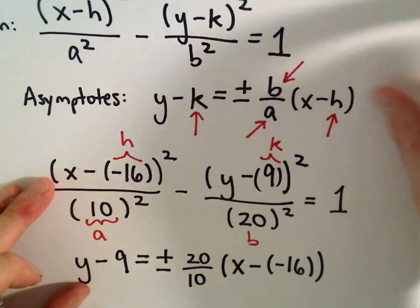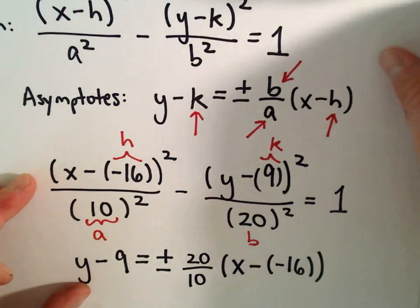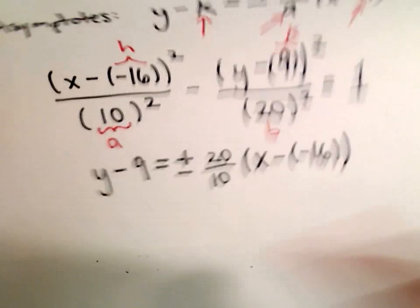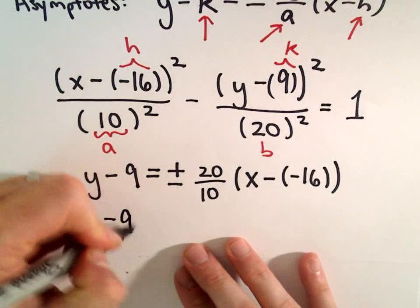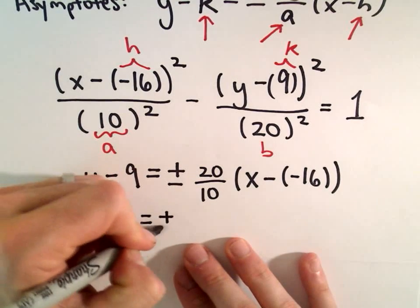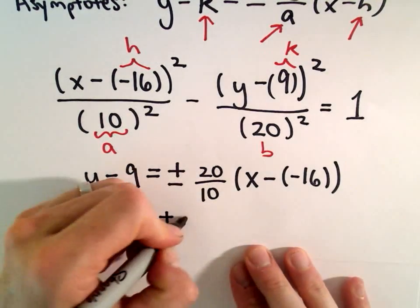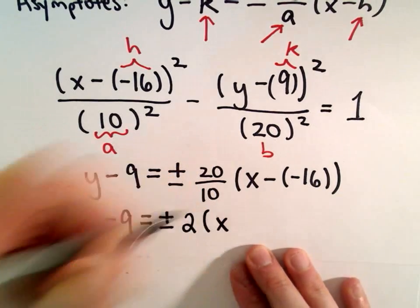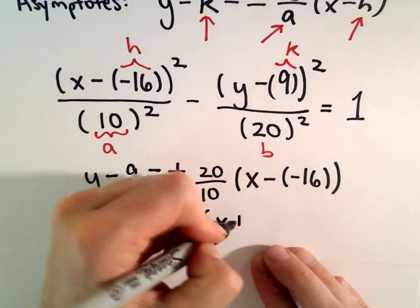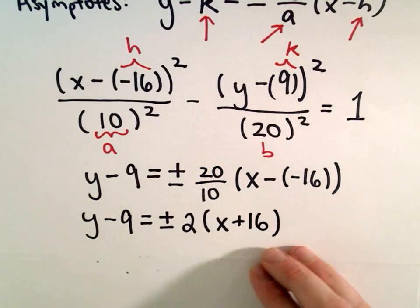We could simplify this down just a little bit. It's just writing things in the proper form and knowing formulas. So 20 over 10 is going to be 2, x minus negative 16 will be x plus 16. And now we have our asymptotes.